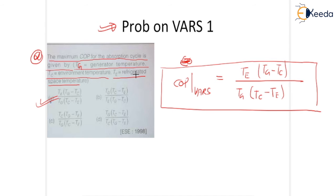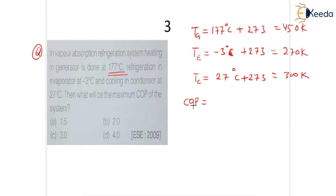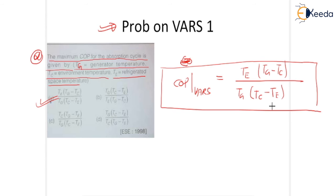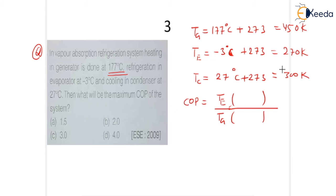This TE, this TE is nothing but refrigerator space temperature. That means TE upon Tg. TE upon and here this is your TE evaporator. So TE upon Tg, and here in bracket, again what is the formula? Tg minus Tc and Tc minus TE. And Tc is nothing but your environment temperature. So this formula is given.